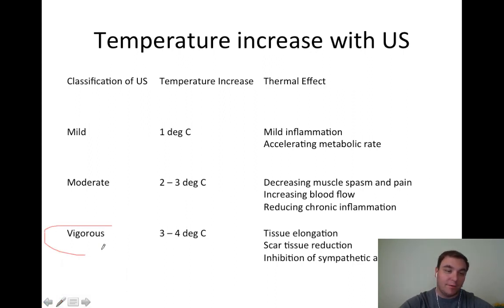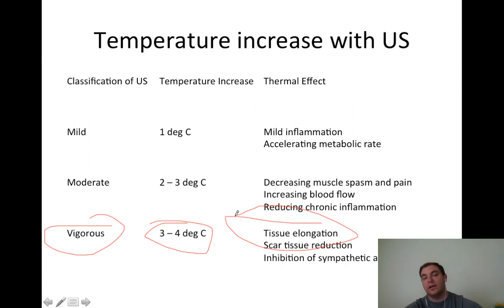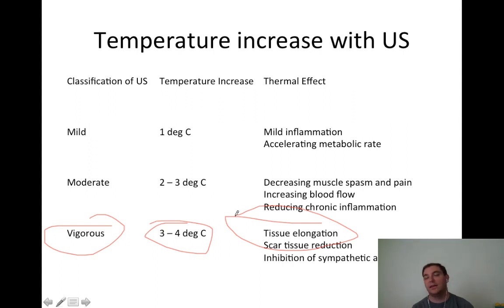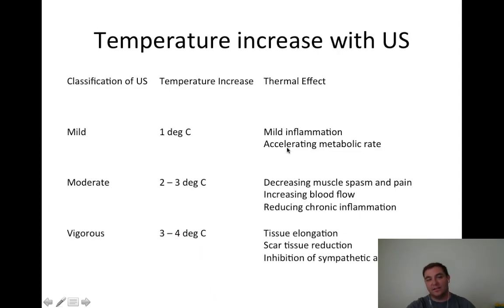For vigorous heating at three to four degrees Celsius change, you need that level for tissue elongation and scar tissue reduction. Many people think heating a hamstring will help stretch it, but if you don't increase the temperature to three to four degrees Celsius, you won't get tissue elongation.